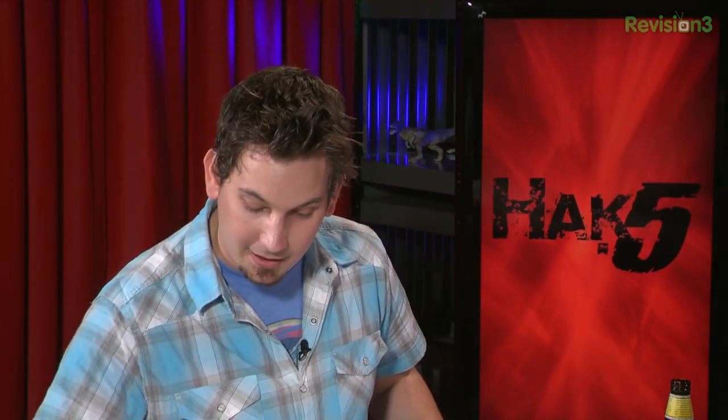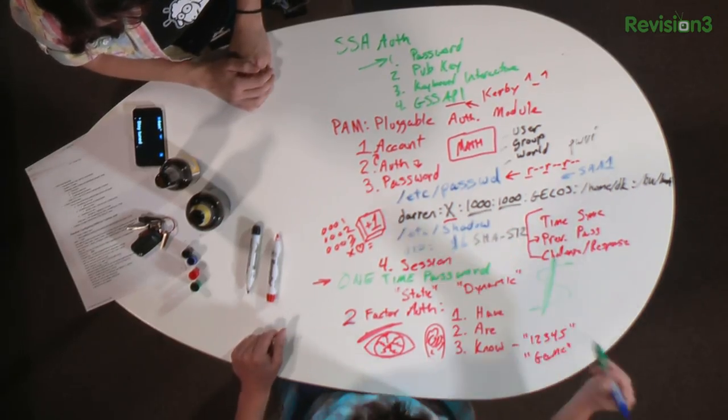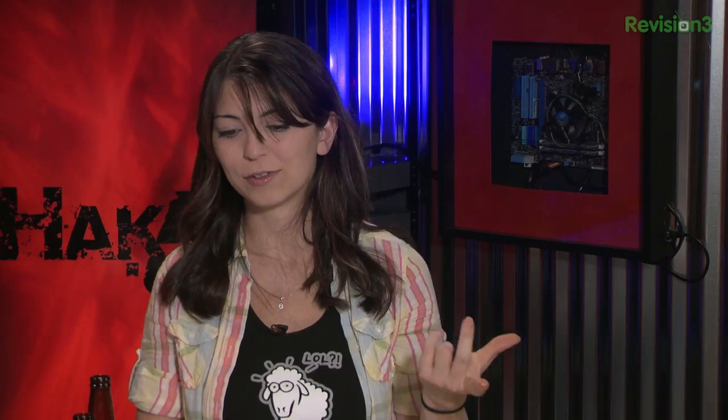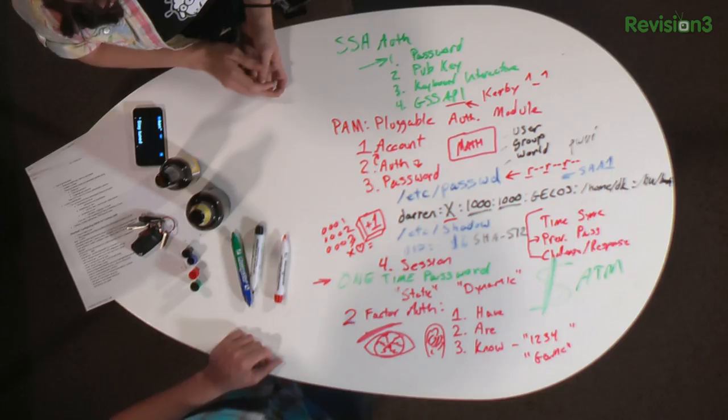You can already think of an example of two-factor authentication you use all the time — your ATM debit card. It's something you have and something you know, your PIN. You've got the plastic card and you know the PIN number. Now that we've covered that and talked about practical implementations, I'm going to show you how to implement the YubiKey into your SSH daemon on your Linux box by just adding a PAM module.